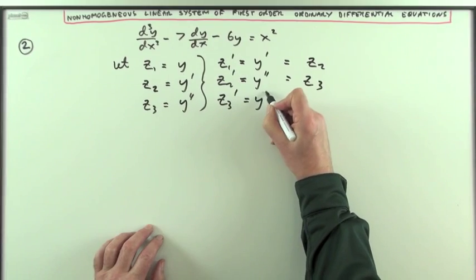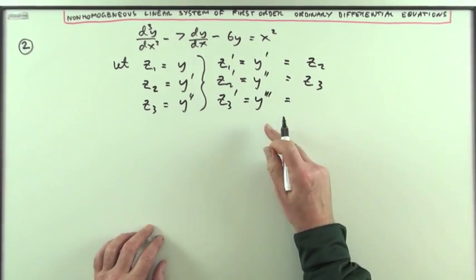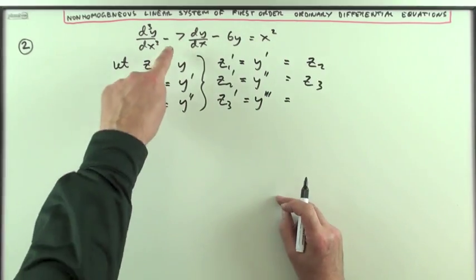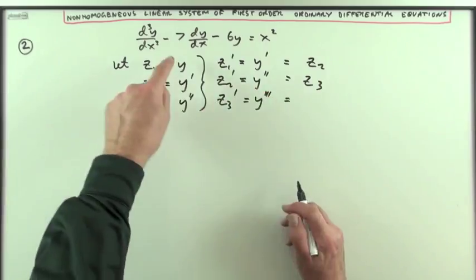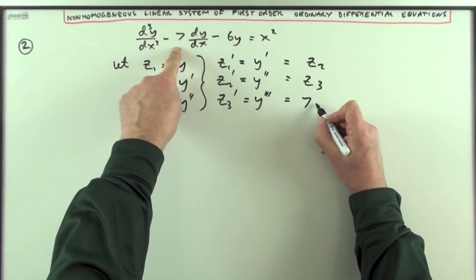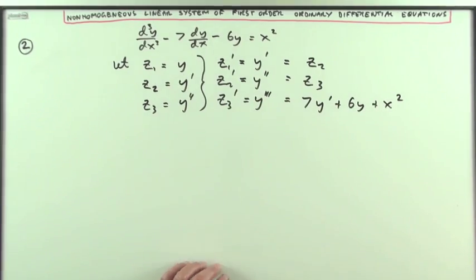z3 dashed will be y treble dashed. Now this time, there isn't anything to equate it to, so I'll go back to the original equation. That third derivative would be, taking everything to the other side, 7y dashed plus 6y plus x squared,